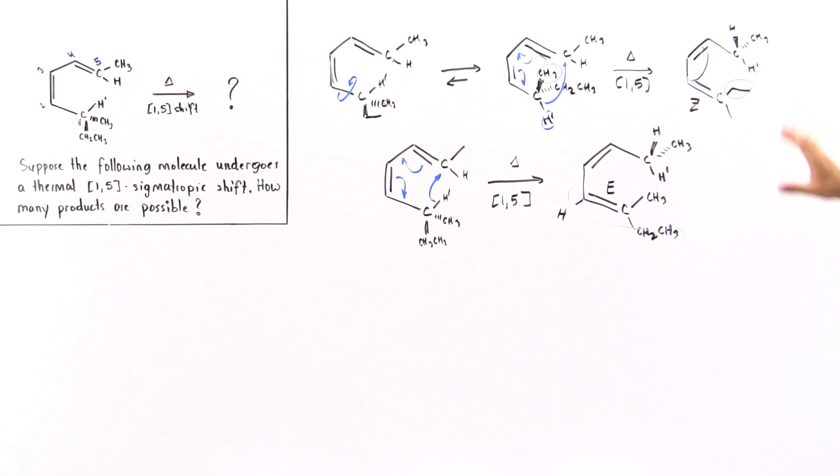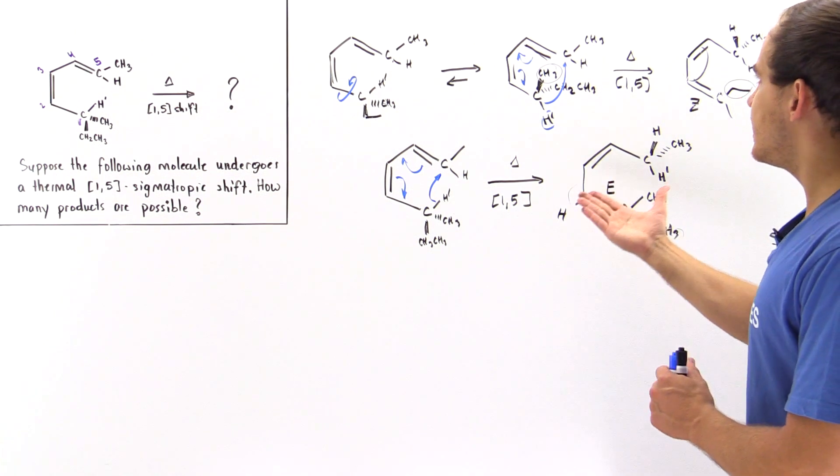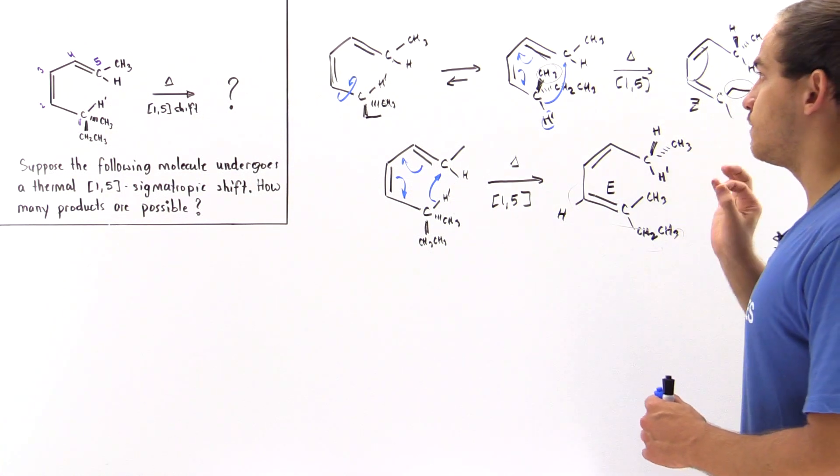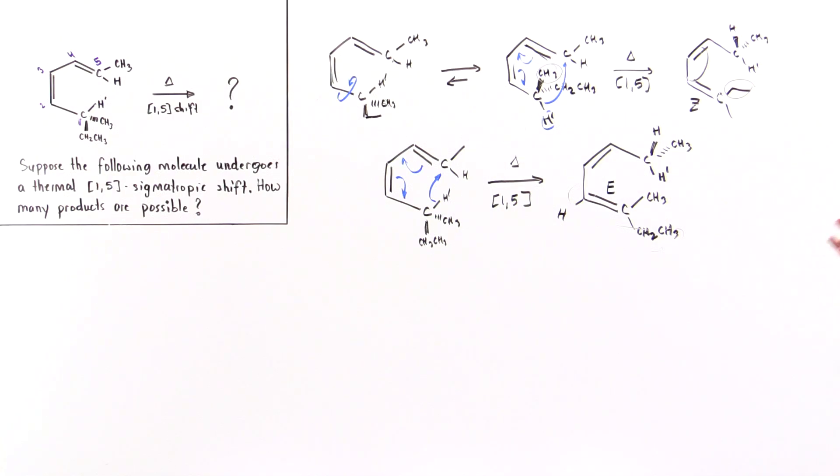And so we see that in our thermal 1,5 sigmatropic reaction that takes place in the suprafacial manner with suprafacial motion, our two products that are formed are the Z product and our E product.